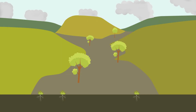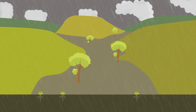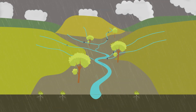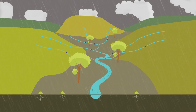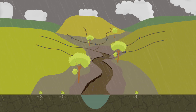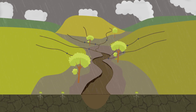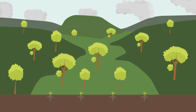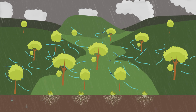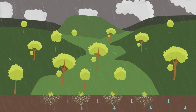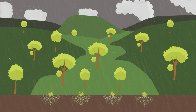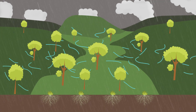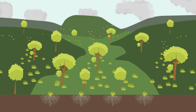Gullies form when water cannot penetrate the earth and instead concentrates in narrow pathways between grass or along animal trails. As the speed of the water increases, it becomes more erosive, cutting deeper and deeper into the soil. When water can infiltrate into the earth due to good soil texture and organic matter, it rehydrates the land and minimises the likelihood of gullies forming.